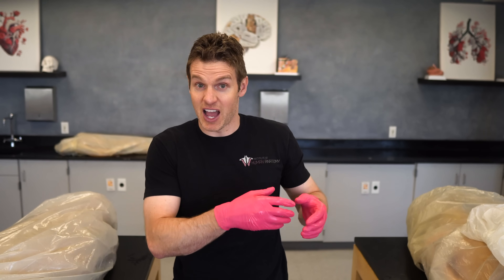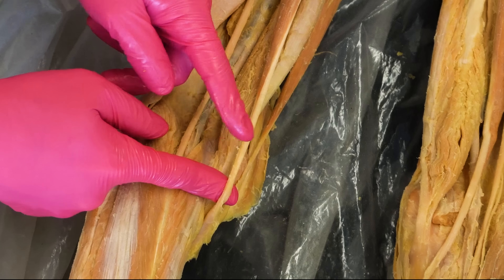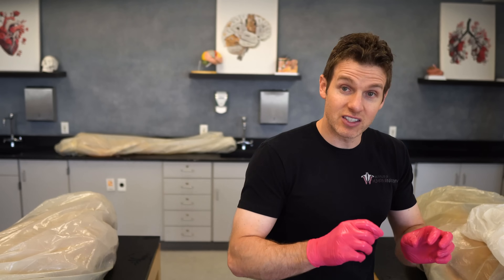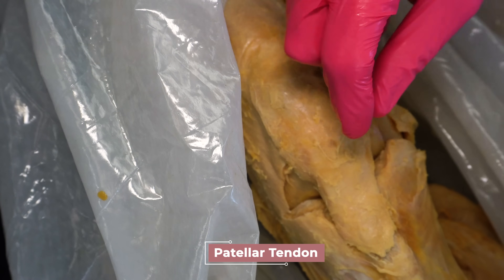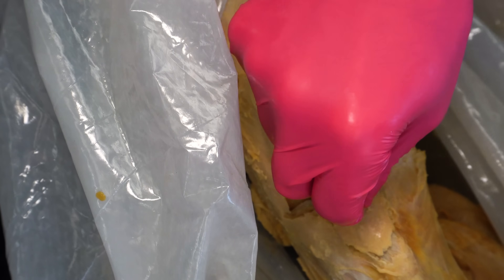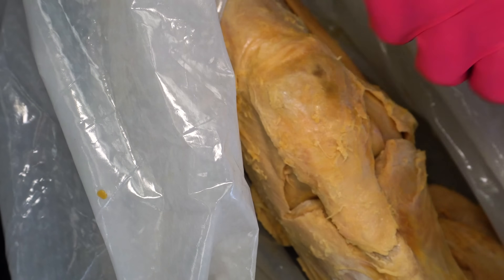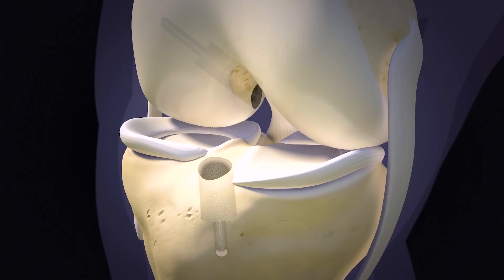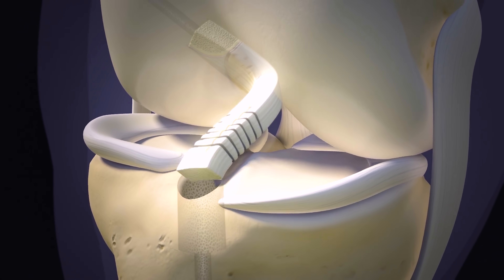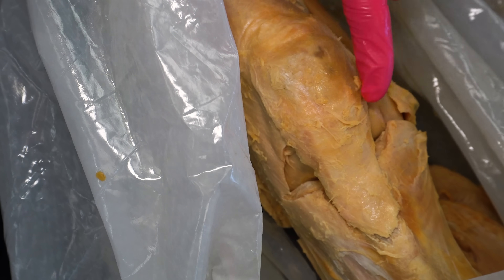There are always pros and cons to each procedure. One pro of the semitendinosus graft is how strong this newly constructed ACL can be. However, when the surgeon takes this graft it doesn't come with any bone blocks or bone plugs, so fixation to the tibia and femur needs to be done with screws or other fixation devices. With the patellar tendon option, they take a portion of the patellar tendon along with a piece of the patella and a piece of the tibia, so this graft comes with two bone plugs at both ends of the newly constructed ACL, which can be beneficial when anchoring it to the femur and tibia.